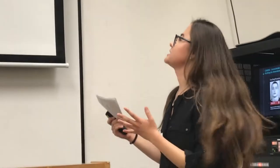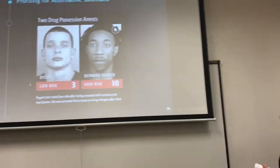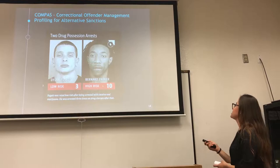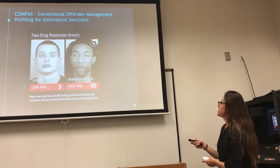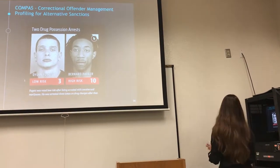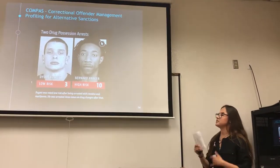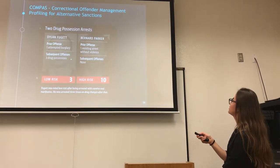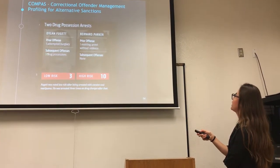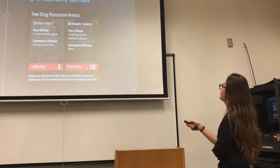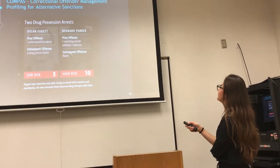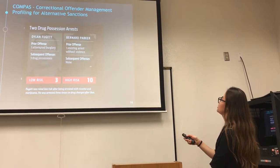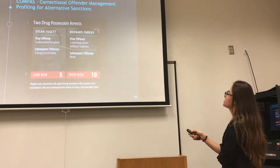Comparing two people under this AI tool — both drug possession arrests. The man on the left is seen by the AI as Caucasian and received a low risk score of 3, while the man on the right, seen as African American, received a high risk score of 10. Their actual criminal activity does not accurately correlate: Dillon has prior offenses including one attempted burglary and three drug possessions, while Bernard has only one resisting arrest without violence as his only prior offense. It doesn't make sense why their risk scores are so different.